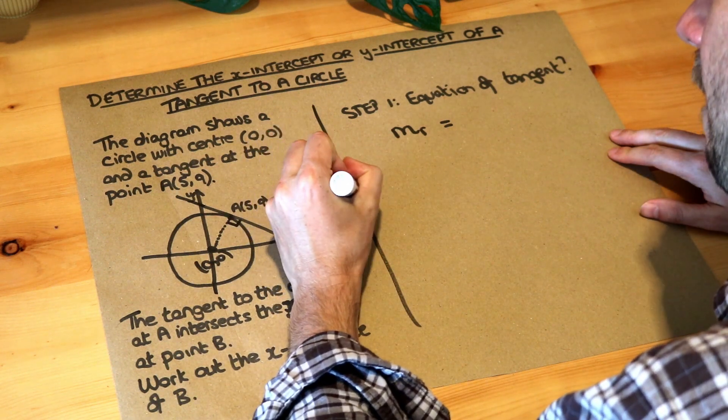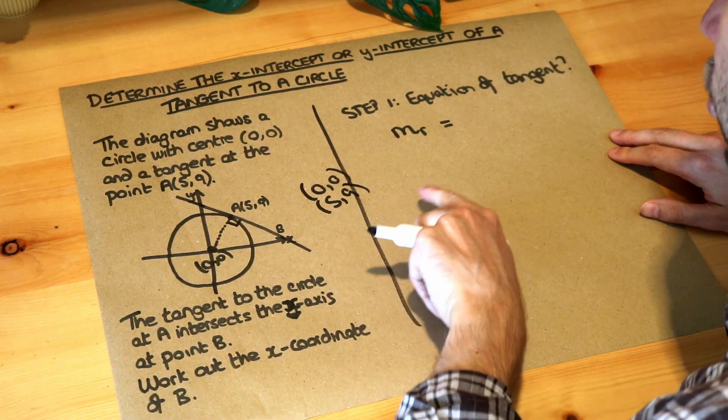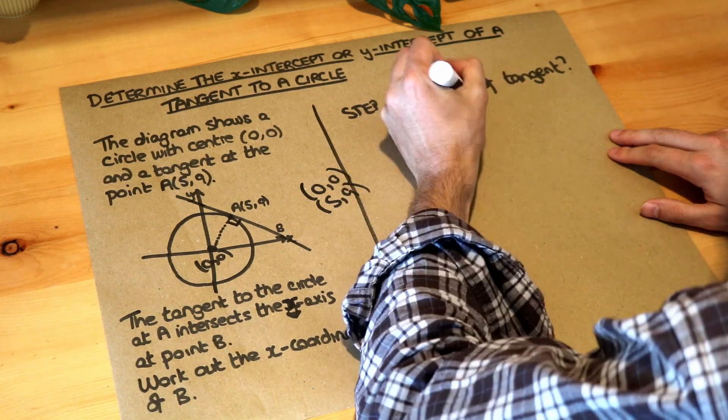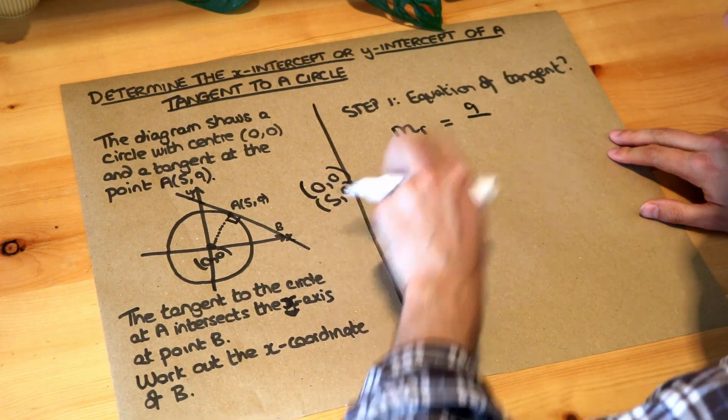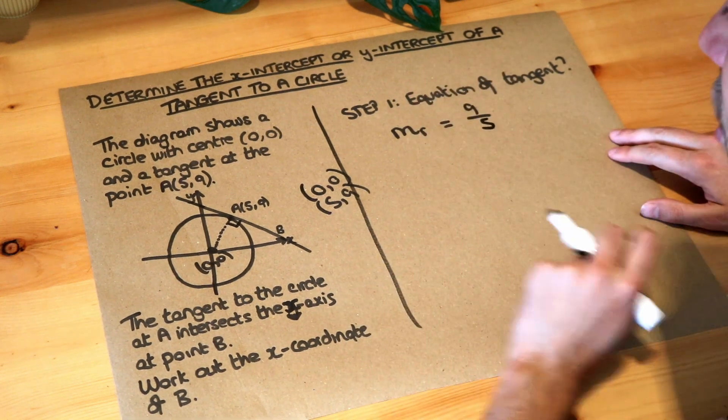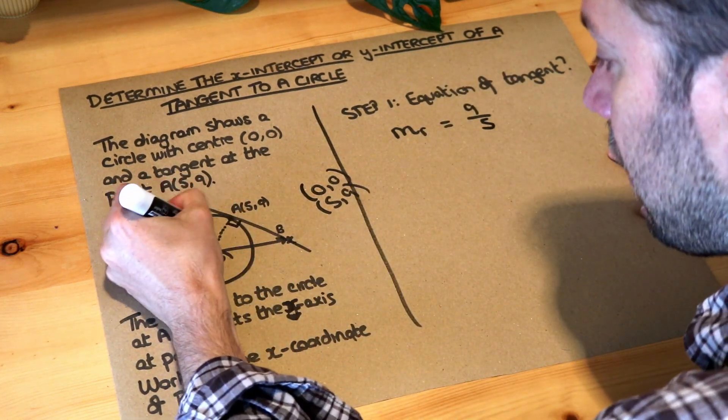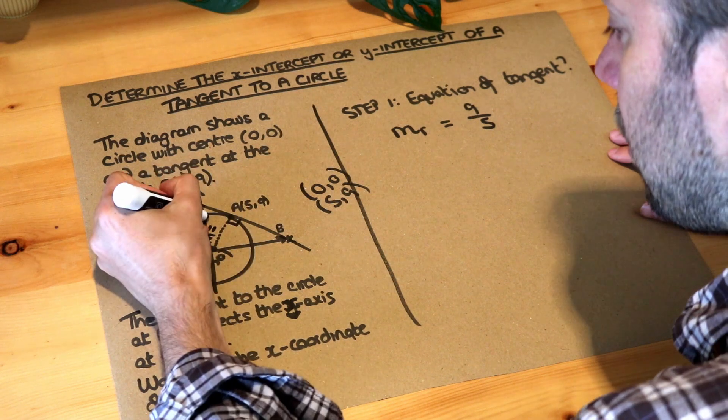Here to here, the change in y, 0 to 9, is 9, and the change in x from 0 to 5 is 5. So that's the gradient of this. So let me write that in. The gradient is 9 over 5.